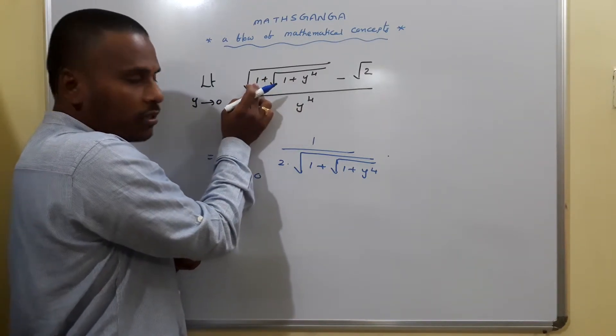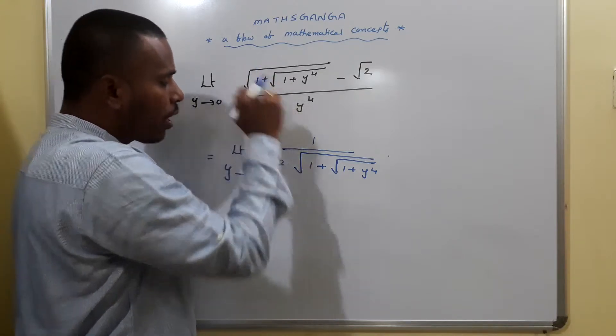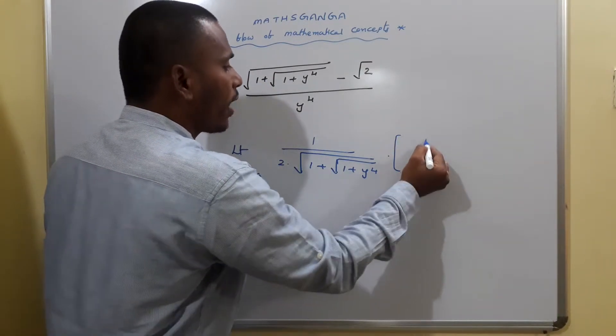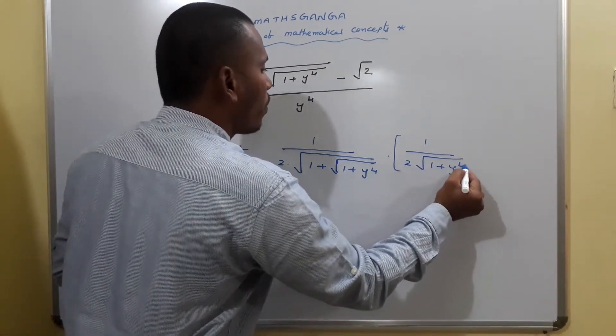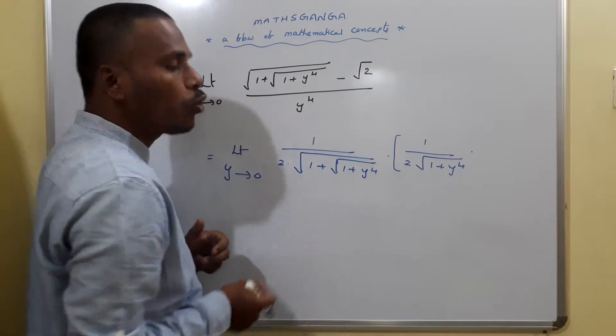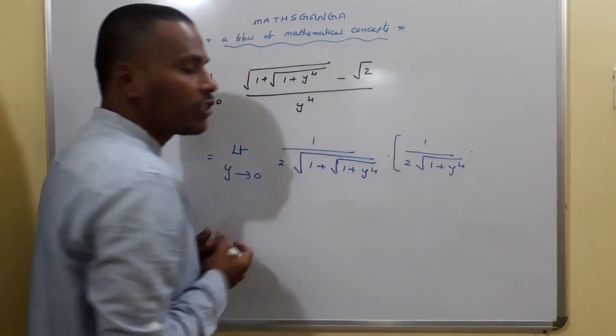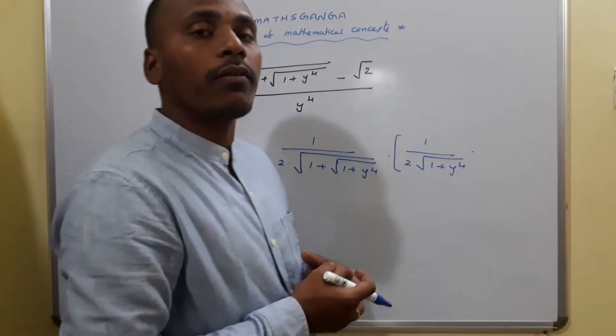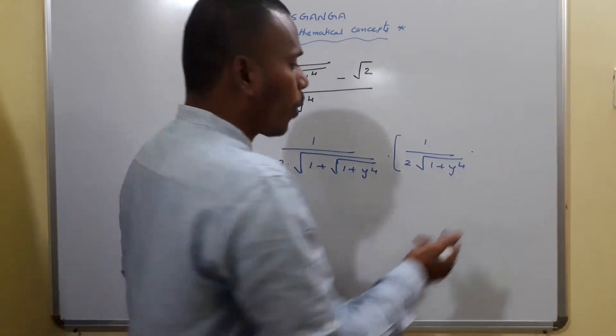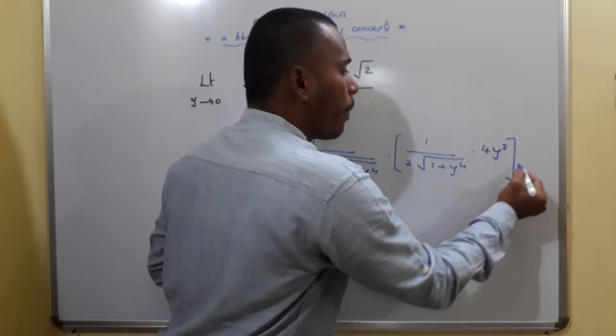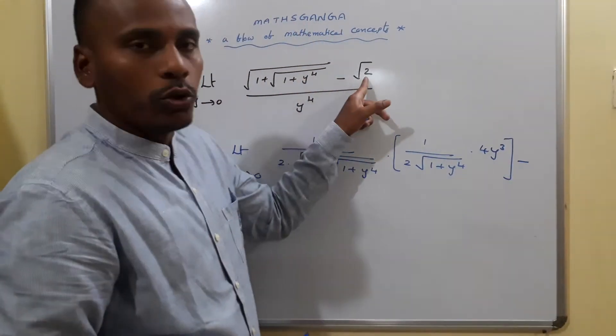1 plus y power 4, for this 1 it is 0, and for this root is again 1 by 2 root. So this is again 1 by 2 root of 1 plus y power 4 into again we need to apply derivative for this, the term which is under the root, 1 plus y power 4. For this 1 it is 0, for this y power 4 it is 4y cube.